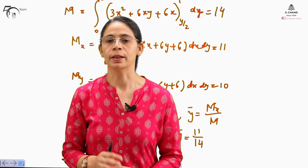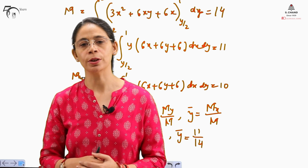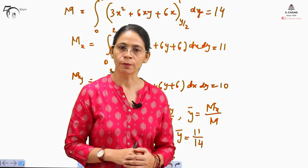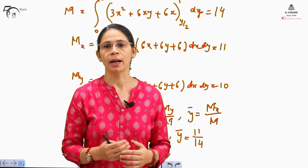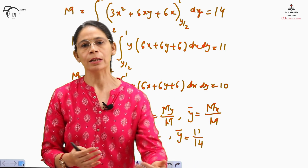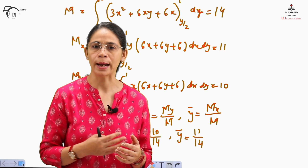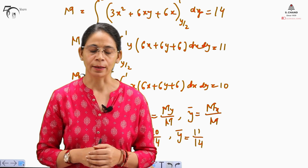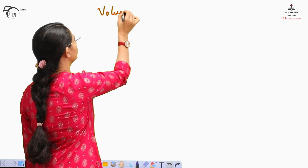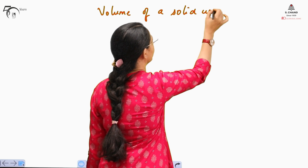That is how we have completed the question for center of mass. The next application of double integral is volume. We can find out the volume of the solid generated by a region of integration. A solid will be formed when this region of integration is revolved about either the x-axis, y-axis, or any oblique line. This is the volume of a solid using double integration.